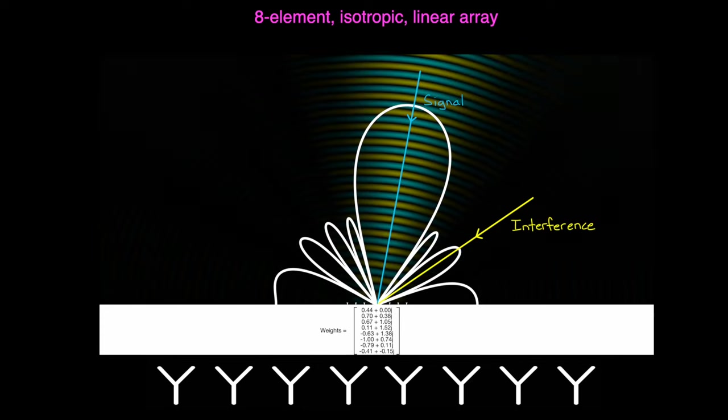Of course, that is a silly option. We're not just trying to optimize for lower interference. We also have a constraint in that we want to maintain the same gain in the direction of the signal. That is, we want to minimize power variance, but not distort the signal.